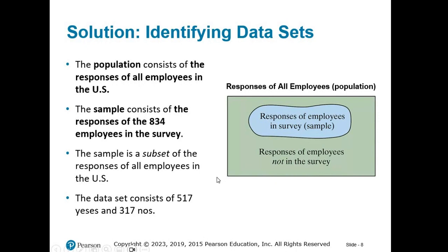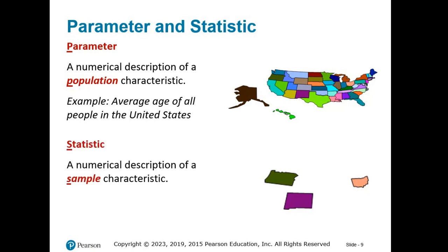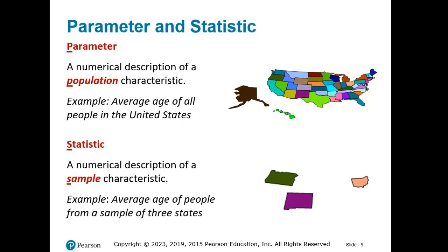Now that we can tell a population set from a sample set, let's talk about the information in each. A parameter is a numerical description of a population characteristic — for example, the average age of all people in the United States. A statistic is a numerical description of a sample characteristic — for example, the average age of people from a sample of 3 states. It helps that parameter and population both start with P, and statistic and sample both start with S. Note that statistics can change from sample to sample, but population parameters remain fixed values.